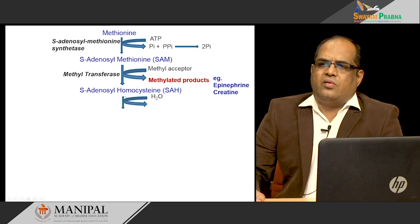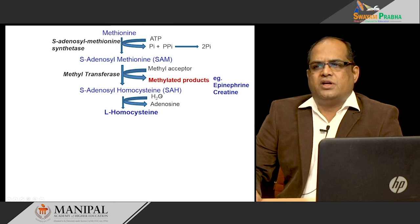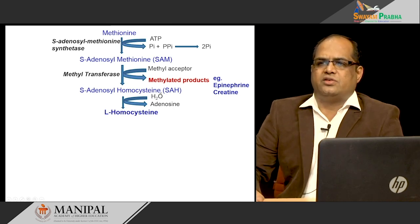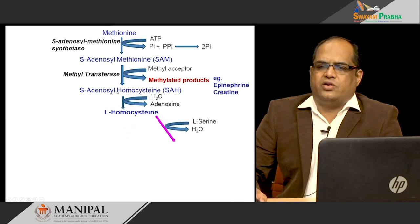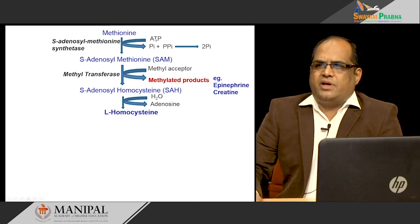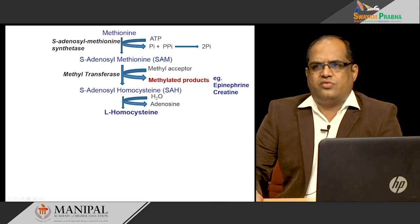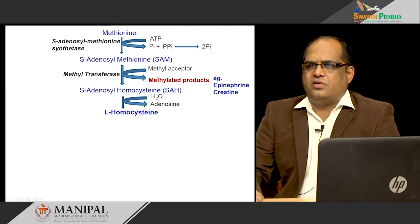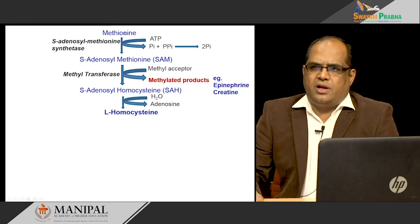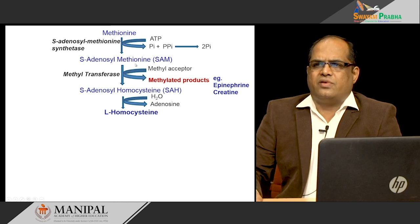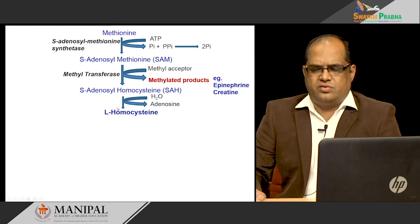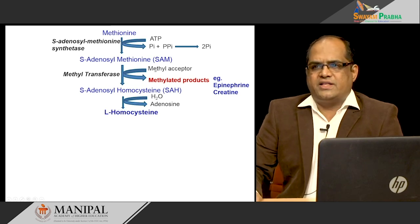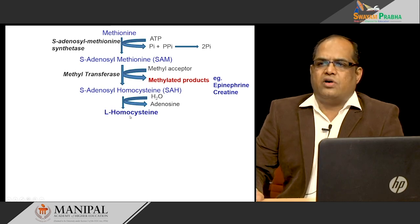In the next reaction, S-adenosyl-homocysteine loses the adenosyl group by hydrolysis to form homocysteine. This is an important molecule in the metabolism of methionine. Essentially, what has happened overall is that methionine has been converted to homocysteine: the adenosyl group was added then removed, making no net structural change, but the methyl group originally present in methionine has been taken out to form homocysteine.